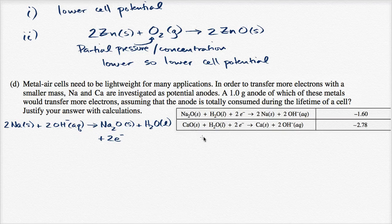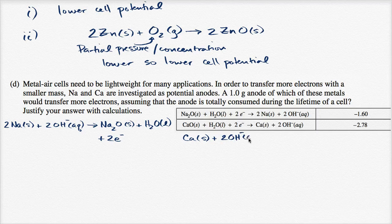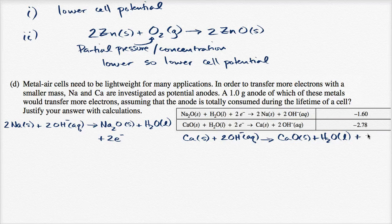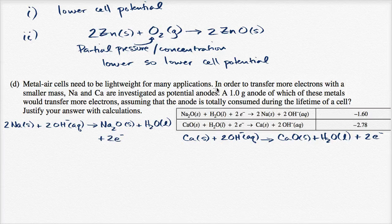Now for calcium, going from right to left: calcium solid, plus two hydroxides (aqueous), yields calcium oxide (solid), plus liquid water, plus two electrons. I've rewritten each reaction in the opposite direction. If I were to write the voltage, I would flip the sign, but they're not asking us about the voltage — they want to know which 1.0 gram anode would transfer more electrons.